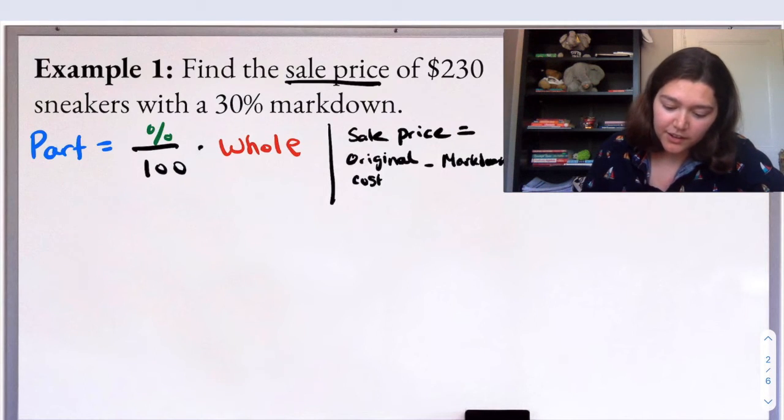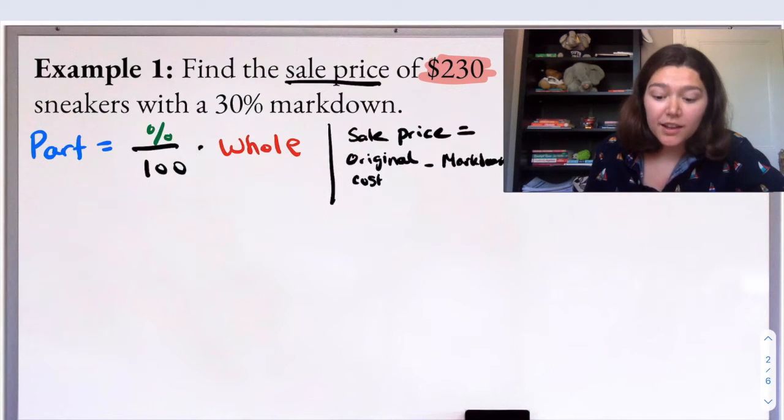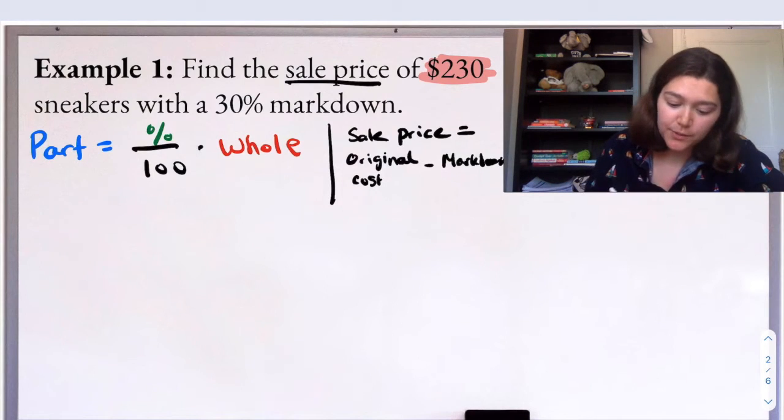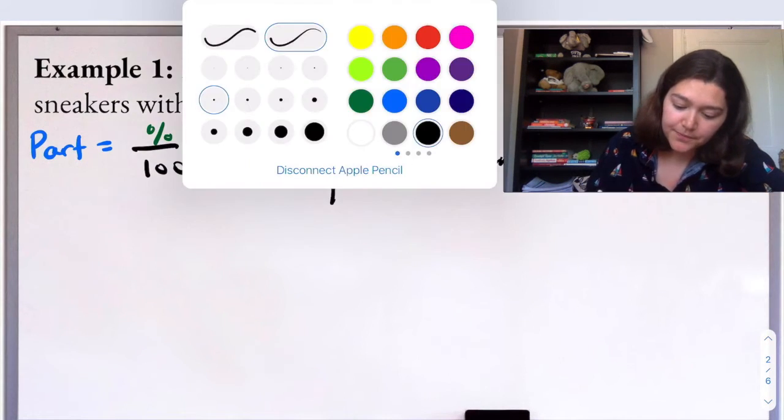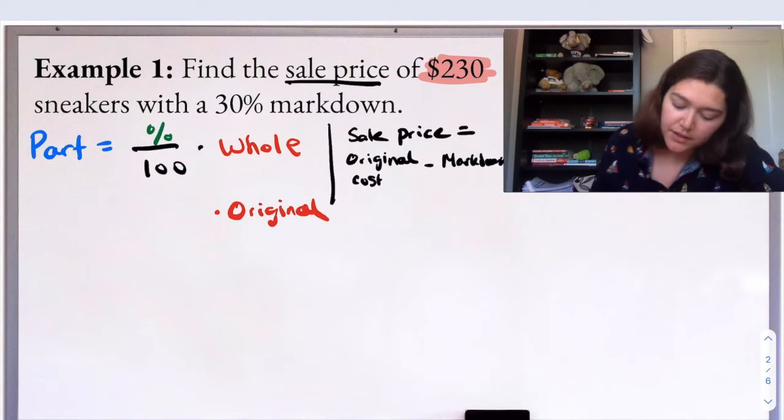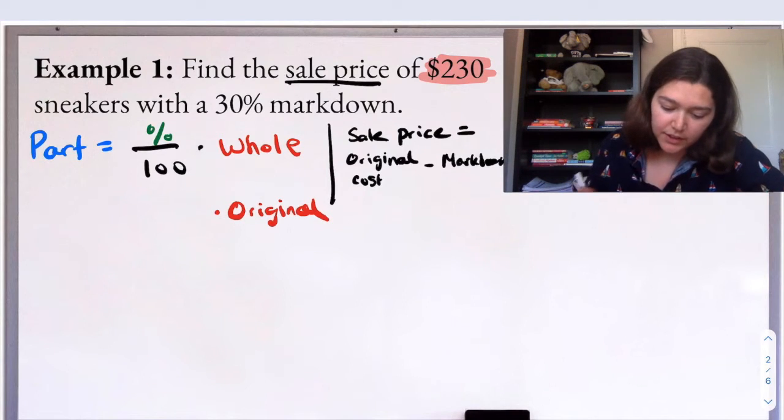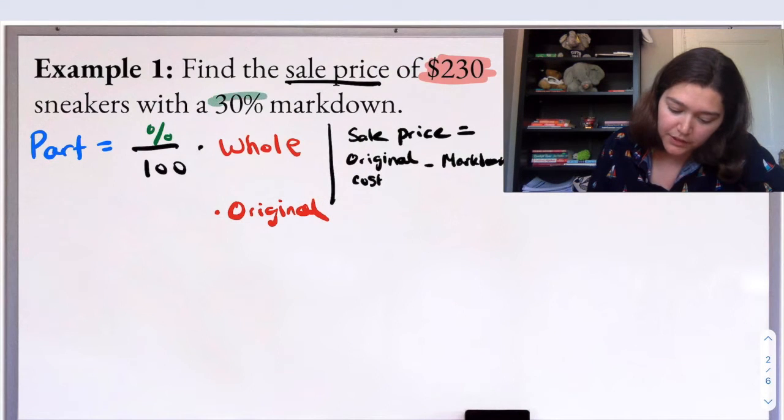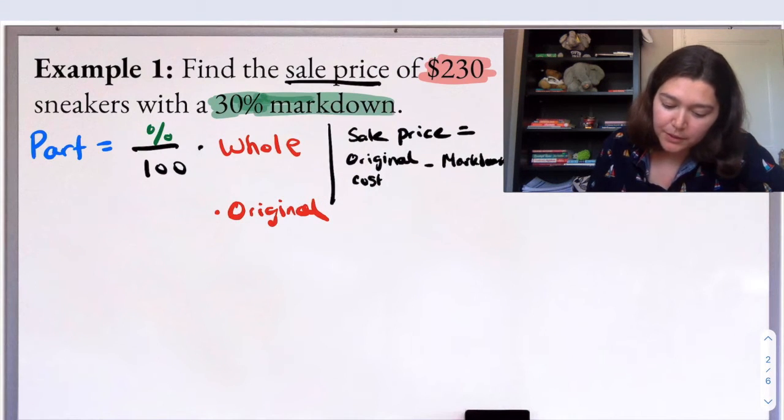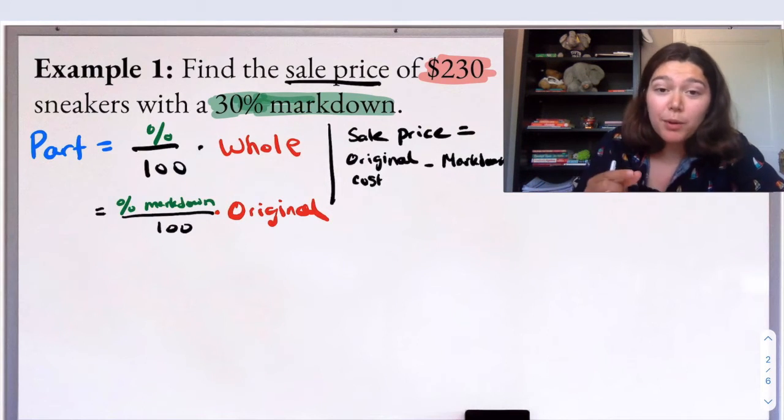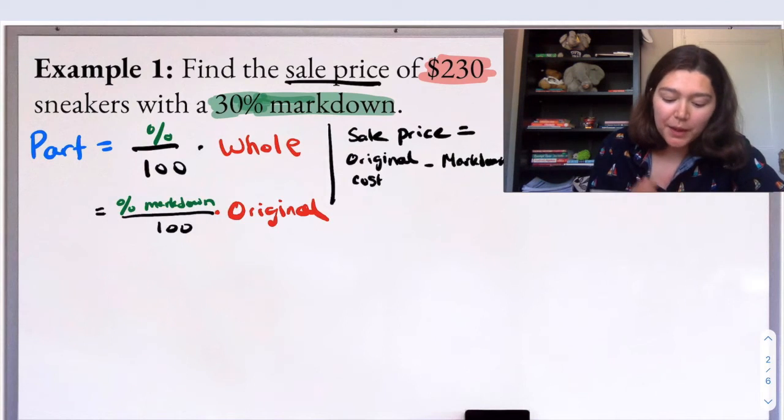I'm trying to find the sale price. So I'm going to need to know the original and the markdown cost in order to find the sale price. Now the original, I already know, the original is my $230. And we said that the original was going to be our whole, we always think of the original as our whole. So in this problem, we're going to be multiplying by my original. I know that's 230.